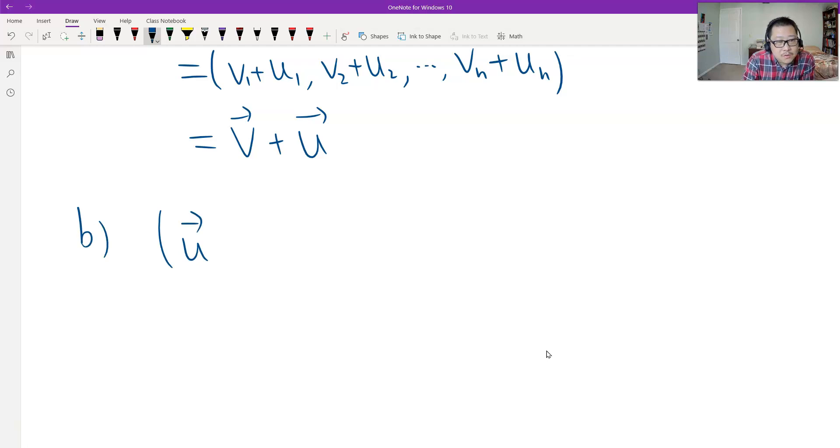Then let me show you one more, associative. Associative is (u + v) + w. You associate first, and then plus w. Or you can associate another way. So it's u + (v + w). No matter which way goes first, you always get the same.